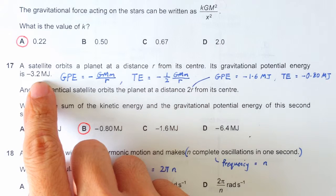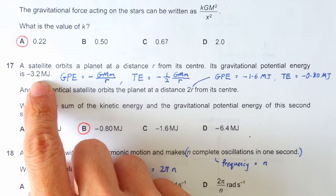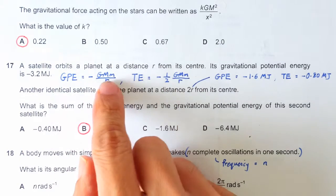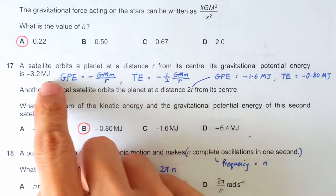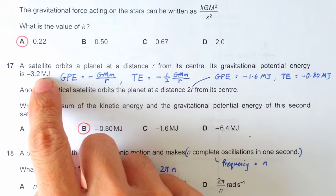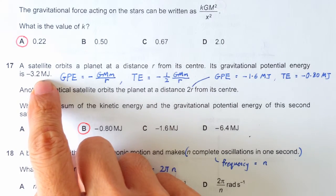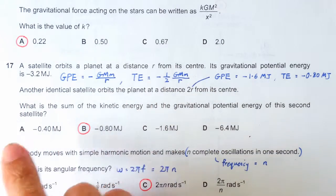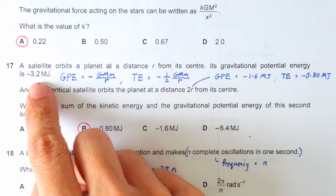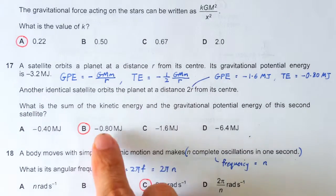So your new GPE should be negative 1.6 MJ, because you have just doubled R. You used to be negative 3.2, if you double R, your GPE now should be negative 1.6 MJ. Remember, total energy is half of your GPE, so half of negative 1.6 will be negative 0.8.